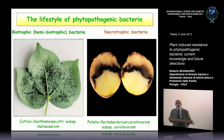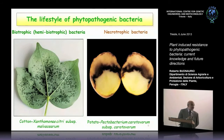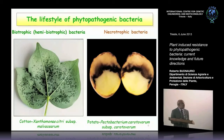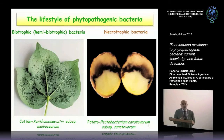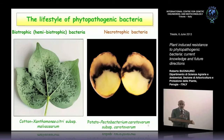It is important to remember the lifestyle of phytopathogenic bacteria. We can have biotrophic — or better, hemibiotrophic — bacteria, like Xanthomonas citri subspecies Malvacearum that attacks cotton. Hemibiotrophic bacteria don't kill the cells; they respect the vitality of the cells to obtain and uptake nutrients.